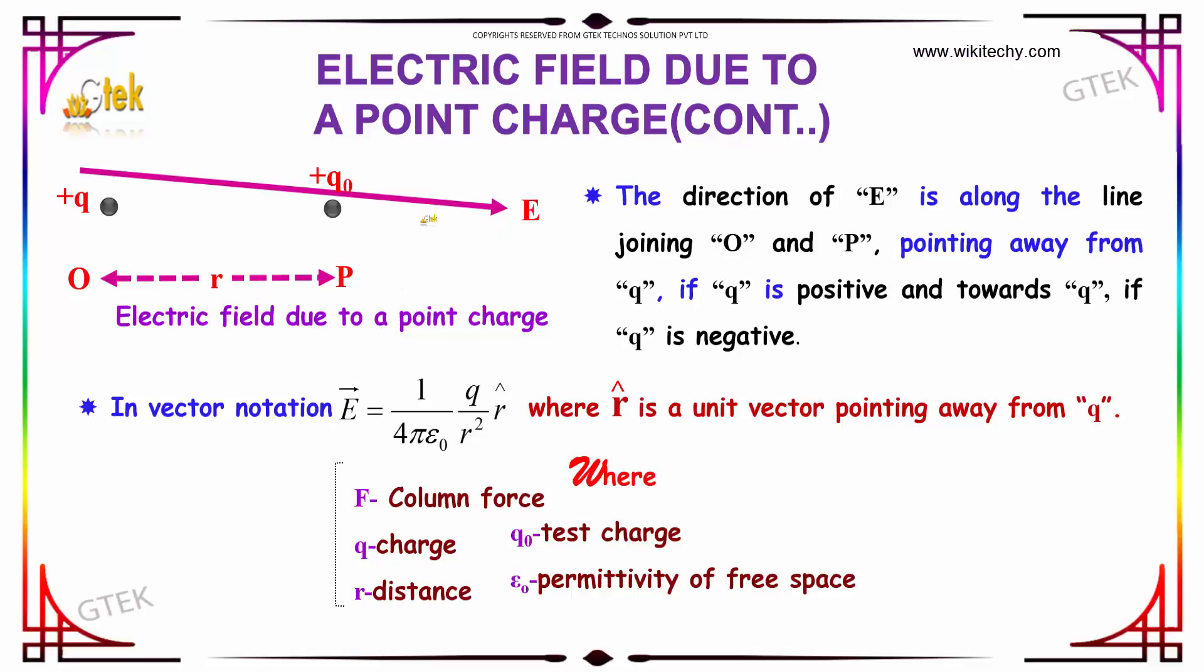Indicating the direction of E along the line joining O and P, when it is pointing away from Q, then this Q will be positive. And if it is towards Q, it is negative.